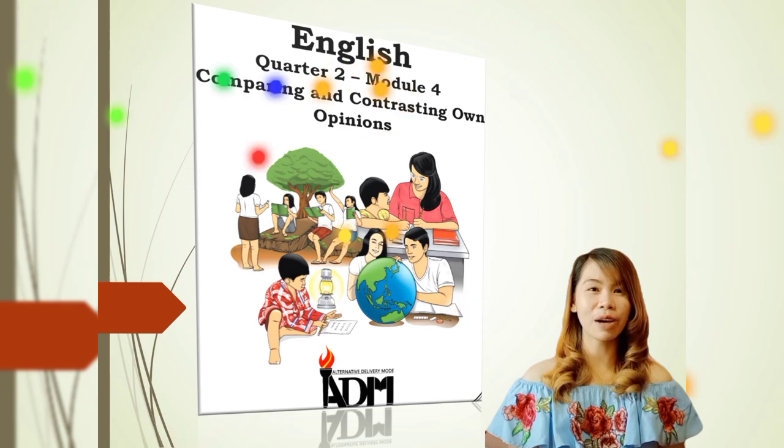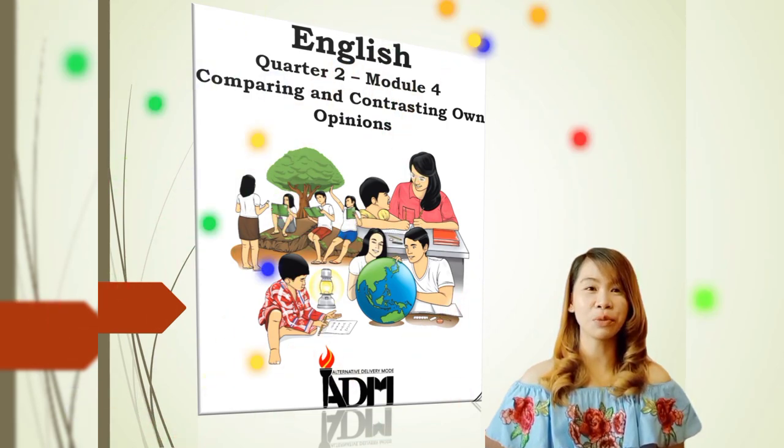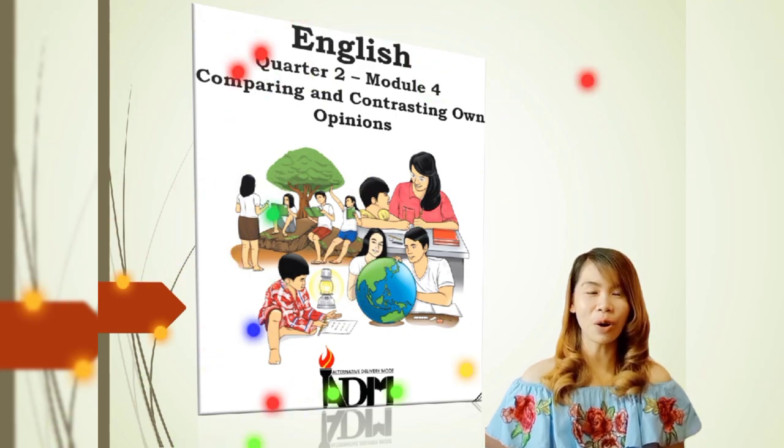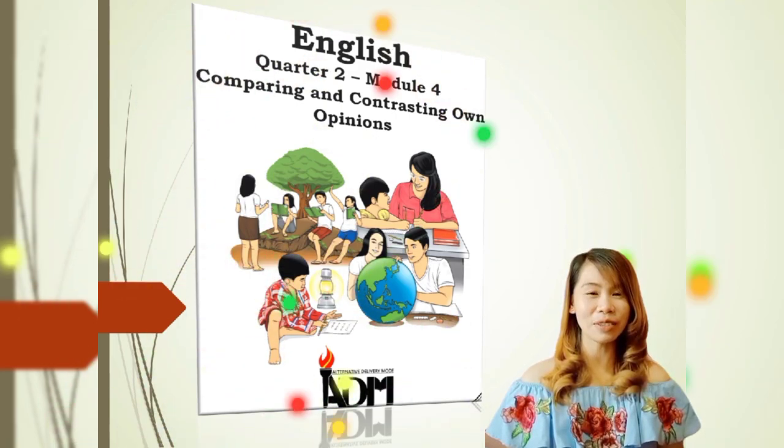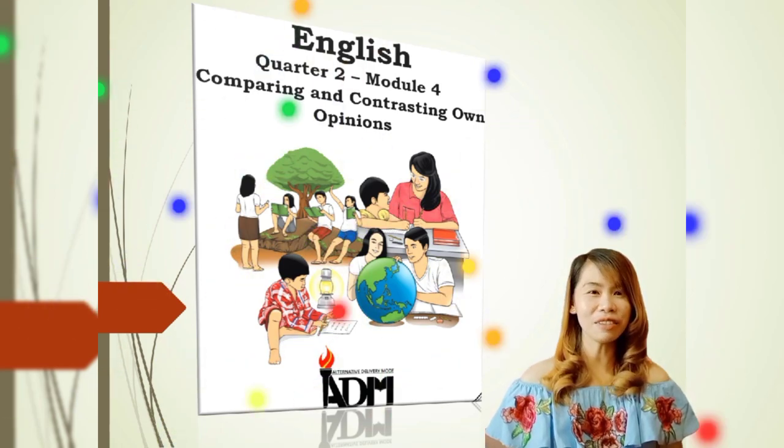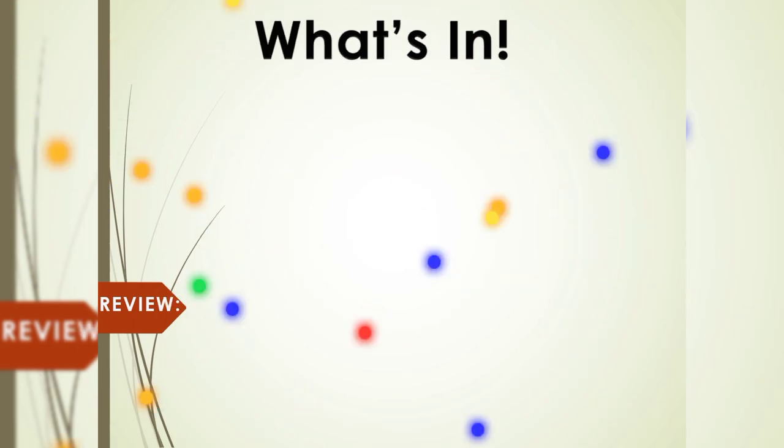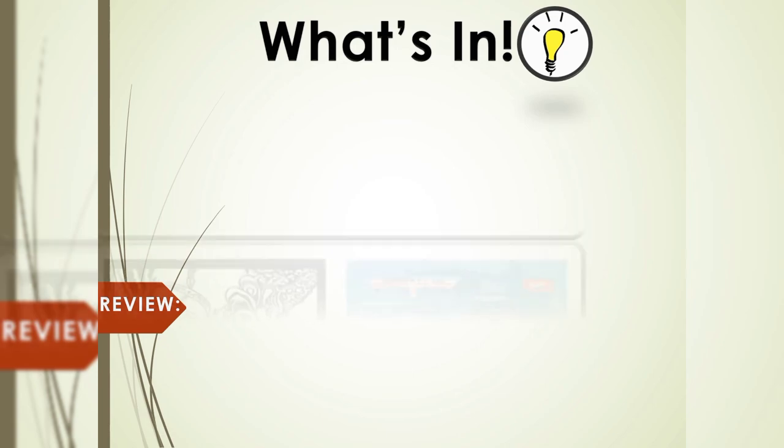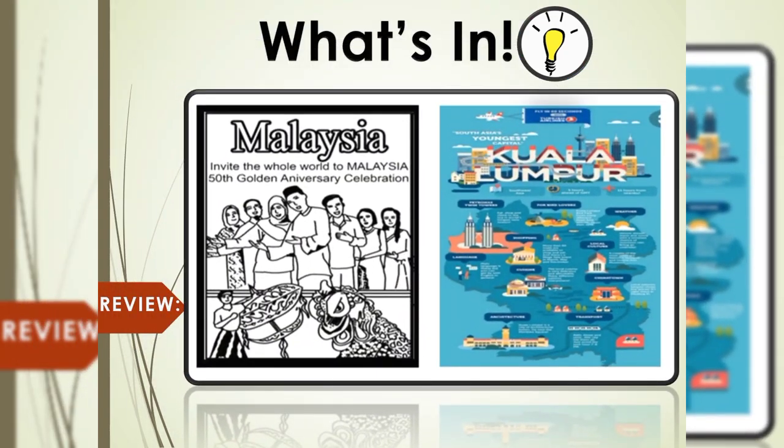You have learned about multi-modal text in the previous module. Before you start with a new lesson, try to recall the important concepts on the use of multi-modal text. Now, you review and do the following activities. What's in? Look at the brochure and infographic below. Then, let's do the next activity.